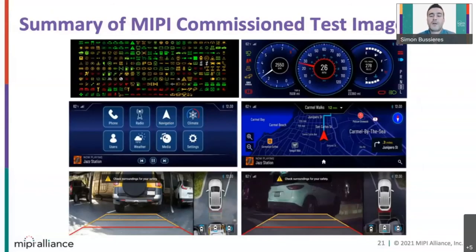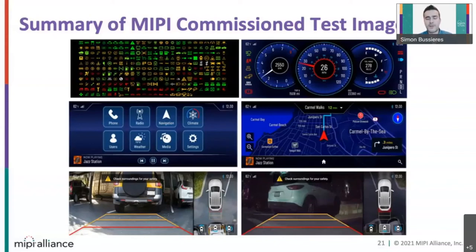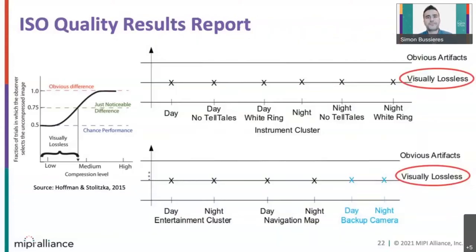Here are examples of MIPI automotive test images that were created by MIPI and used for the visual quality testing. These images also have day and night variants to simulate a change in contrast. They are HDR images.